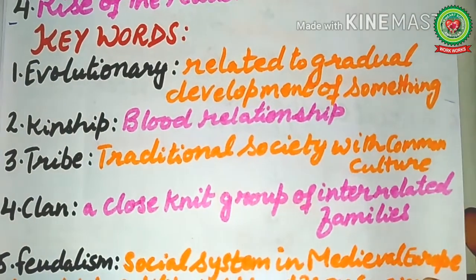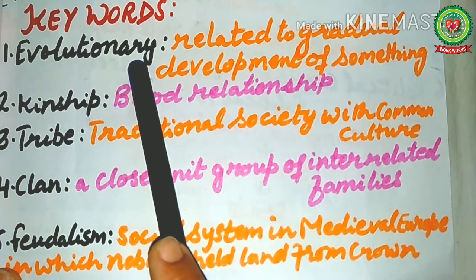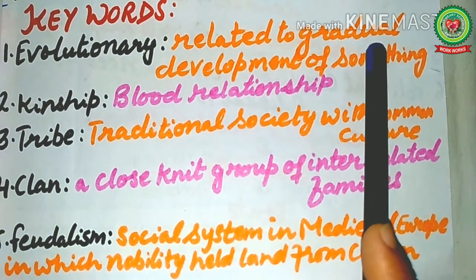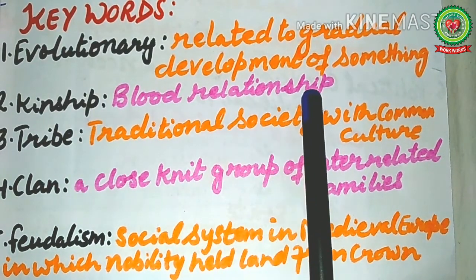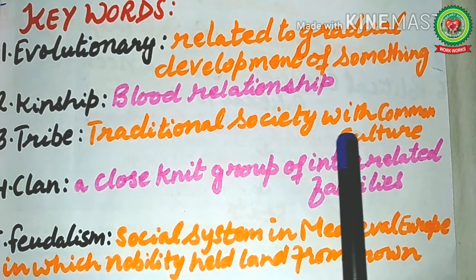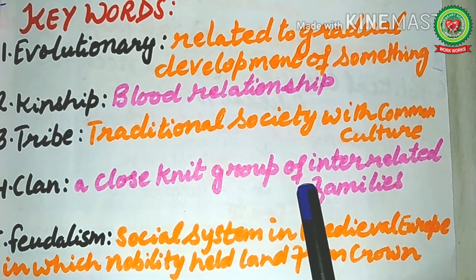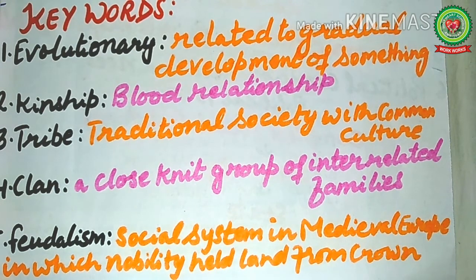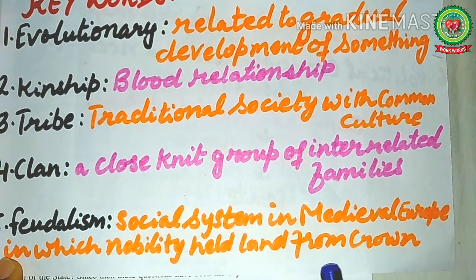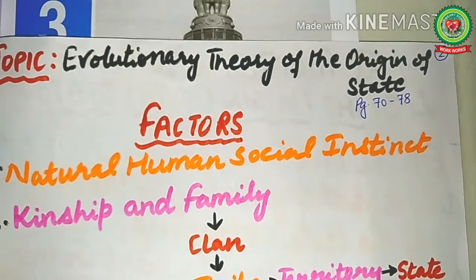Before the discussion of today's topic I would like to discuss the key words with you. The first word is 'evolutionary', which means related to the gradual development of something. 'Kinship' means blood relationship. 'Tribe' is a traditional society with common culture. 'Clan' is a close-knit group of interrelated families. 'Feudalism' is the social system in medieval Europe in which nobility held land from the crown.